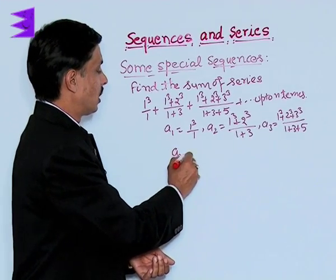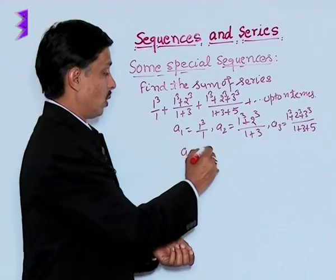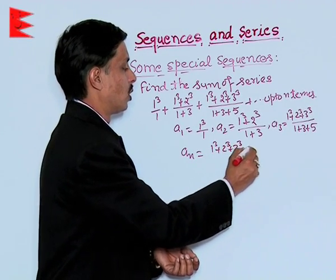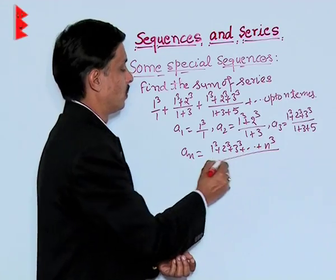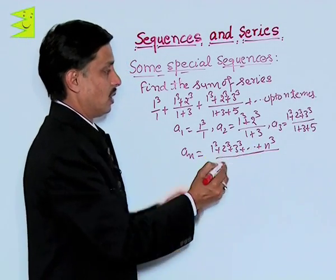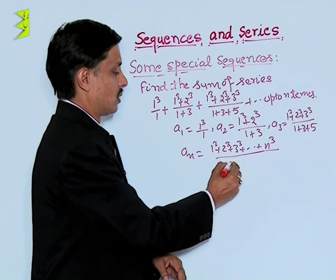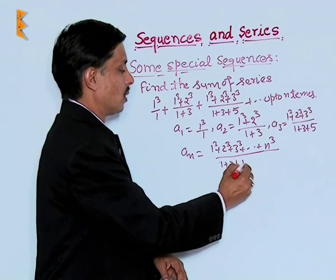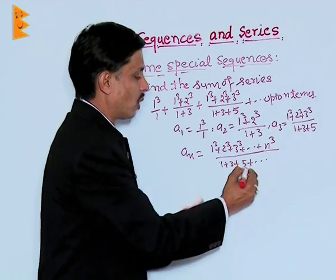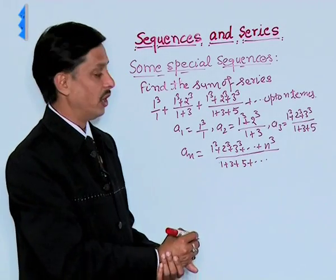Here, its nth term will be 1 cube plus 2 cube plus 3 cube plus dot dot dot up to n cube, divided by sum of first 1 plus 3 plus 5 plus dot dot dot. How many odd numbers? n odd numbers in denominator.